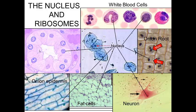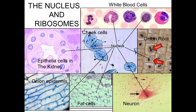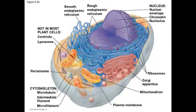Then coming up to the top here we see some epithelial cells in the kidney — this would be the nucleus here within the cell. And then finally, a smear of some cheek cells, the lining of your mouth. These would be some of the cells scraped off of that lining, and we can see the nucleus here inside of that cell. So the nucleus is the control center of the cell.